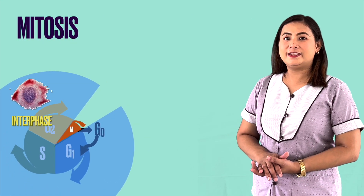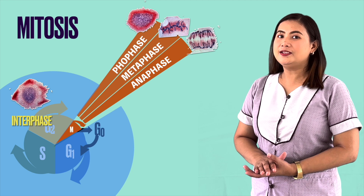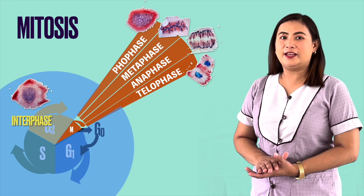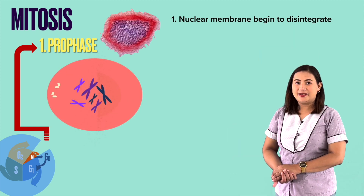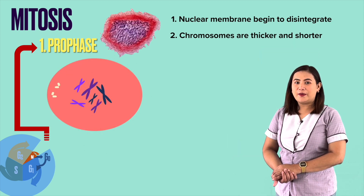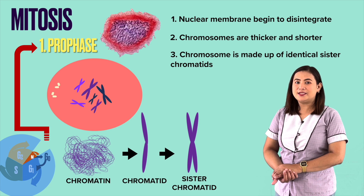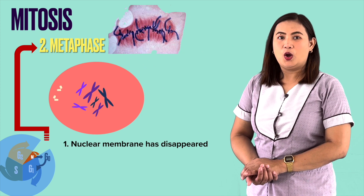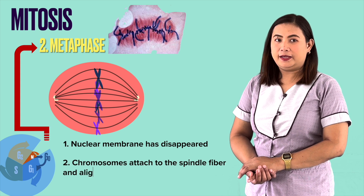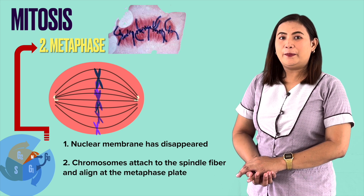Mitosis is divided into four stages: Stage 1 is prophase, Stage 2 is metaphase, Stage 3 is anaphase, and Stage 4 is telophase. In prophase, the nuclear membrane and nucleus may still be present, and chromosomes are thicker and shorter due to repeated coiling. Each chromosome is made up of two identical sister chromatids as a result of DNA replication during the synthesis phase. In metaphase, the nuclear membrane disappears while the highly coiled chromosomes align at the metaphase plate, an imaginary plate equidistant between the cell's two poles. Spindle fibers are also formed.